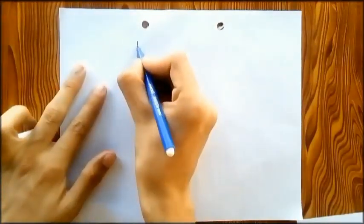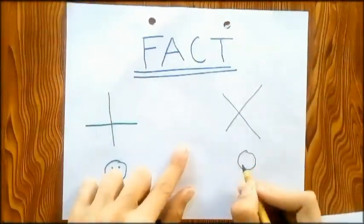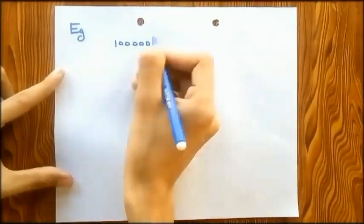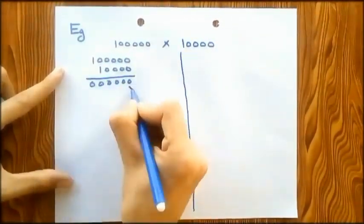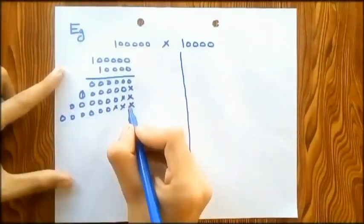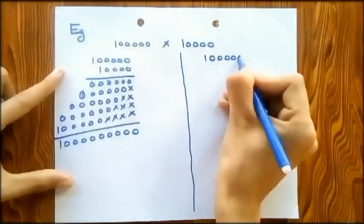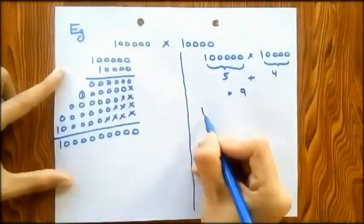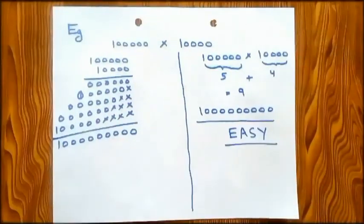First, there is a fact that it is easier to add than to multiply numbers. For example, if you have to multiply 100,000 with 10,000, instead of doing this, you will just count up the numbers of zeros, then add those numbers, and then you will write the answer 1 followed by that number of zeros.